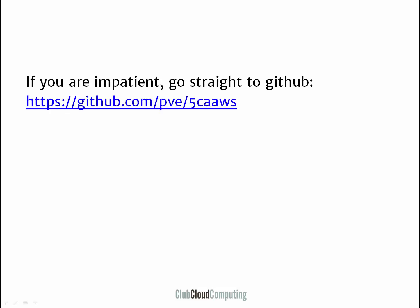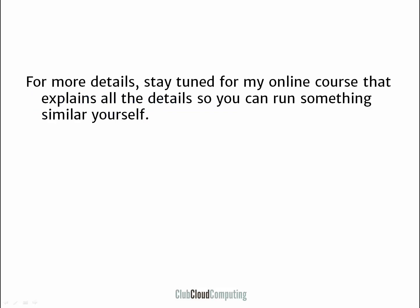If you're impatient, go straight to GitHub. On my GitHub account — PVE — you'll see the example. The name of the repository is 'Five Containers and a Website', abbreviated as 5CAAWS. If you want more details, stay tuned for my online course, which is coming up. That explains all of the details so you can run something similar yourself, or at least be inspired for your own secure Docker implementations.